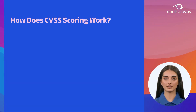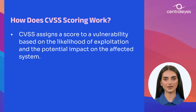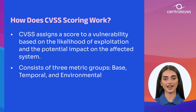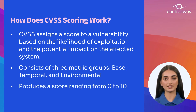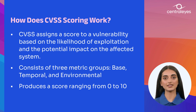CVSS scoring is based on a set of criteria used to evaluate the severity of a security vulnerability, and consists of three metric groups: base, temporal, and environmental. The base metrics produce a score ranging from 0 to 10, which can then be modified by scoring the temporal and environmental metrics. Published CVSS scores are typically base metrics only.